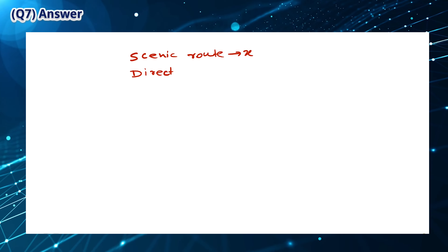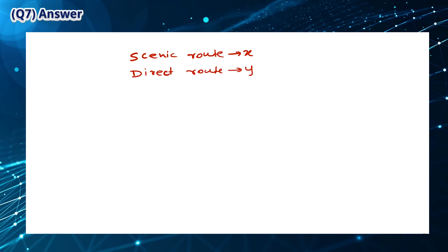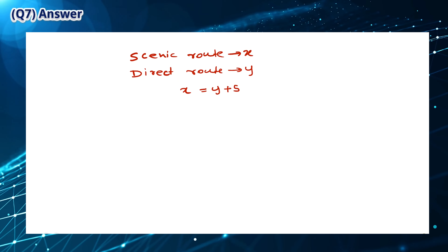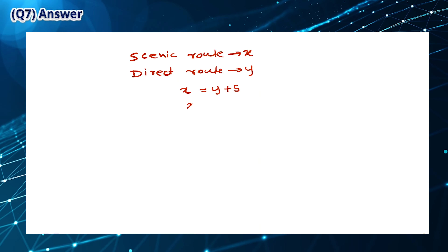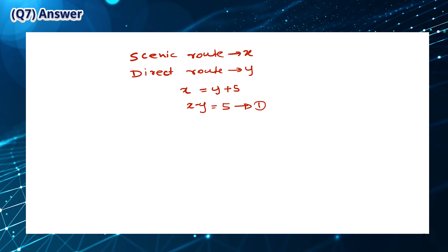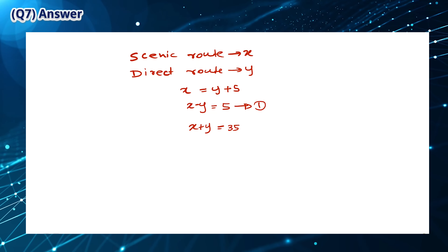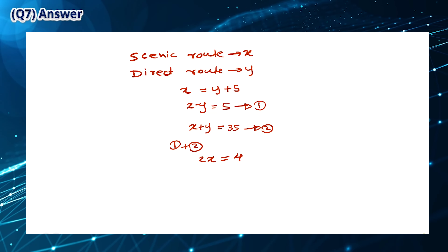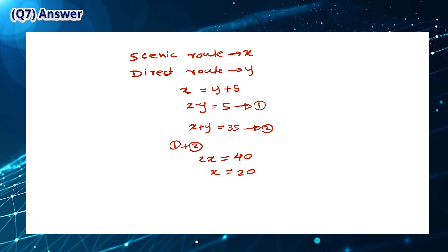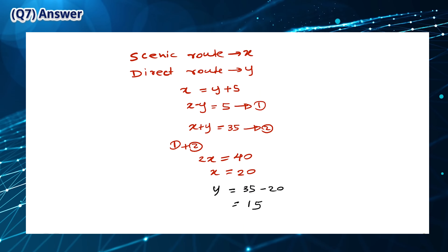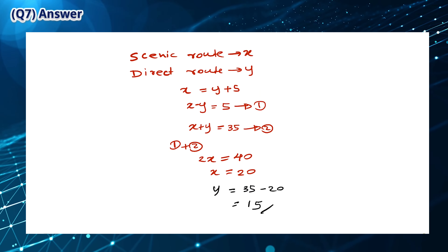Let a cyclic root be equal to x and a direct root be equal to y. We can write an equation for x: x is equal to y plus 5, so x minus y is equal to 5. Also, we know that x plus y is equal to 35. If we add equations 1 and 2, we get that 2x is equal to 40 and x is equal to 20. This means that y is equal to 35 minus 20, which is 15. So the answer is C.